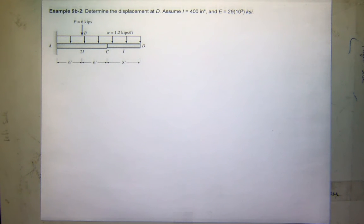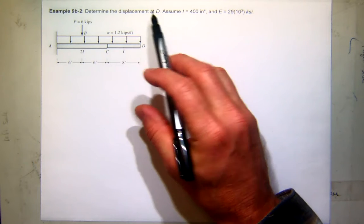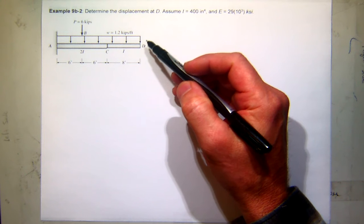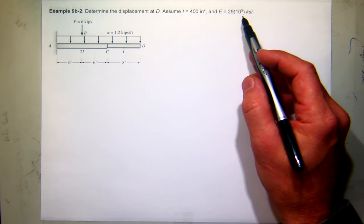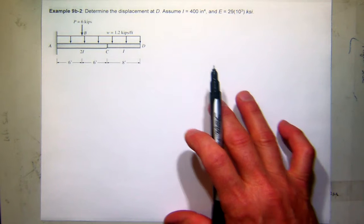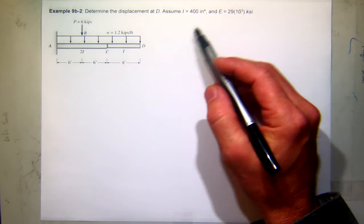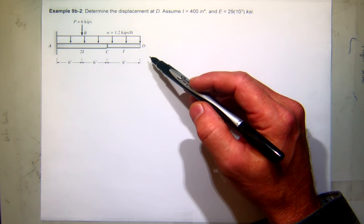All right, so let's work on this problem. We want to determine the displacement at D, which is the free end. We have a value for I and a value for E. So ultimately, we could put these values in and actually compute a numerical displacement at D.